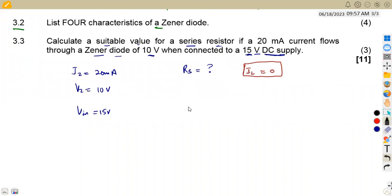Knowing from our formula that the resistance, the series resistance is equal to the voltage in minus the voltage across the Zener diode over the current across. Here we are going to talk about current across the Zener, that is the IZ minus the current across the load in this case. Like I said, we do not have the current across the load. So meaning to say we are going to have this as zero.